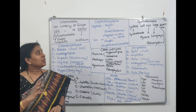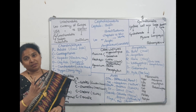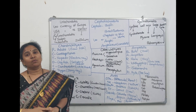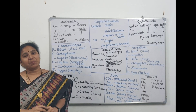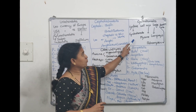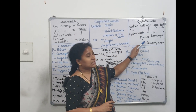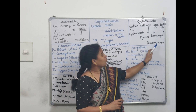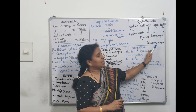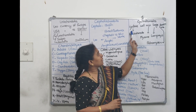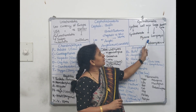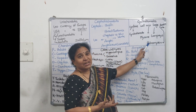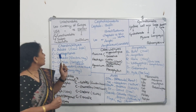Now coming to Cyclostomes. Cyclostomes don't have jaws — they are Agnatha and have a circular mouth. The code for memorizing the examples of Cyclostomes is: 'Cyclone mixes large particles.' Cyclone is for Cyclostoma, mixer is for Myxine, large means Lamprey, particle means Petromyzon. Petromyzon is called Lamprey. So Cyclone mixes large particles — Cyclostoma, Myxine, Lamprey, Petromyzon. Examples of Cyclostomes easily remembered.